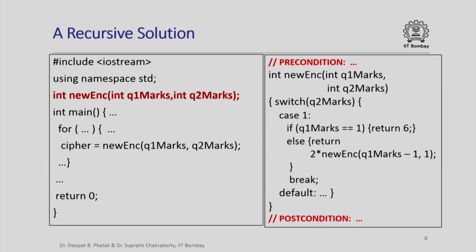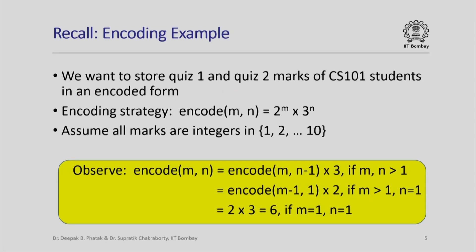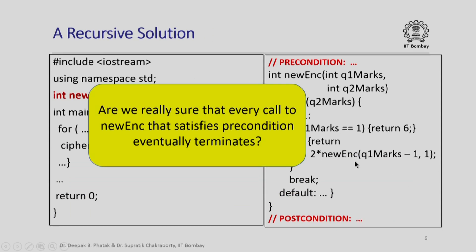We have also seen that this recursive view of the encode function naturally lends itself to a recursive solution in C++. This new encoding function recursively calls itself using that same recursive formulation. Given this recursive solution, one might ask: are we really sure that every invocation of new_enc that satisfies the precondition — that both q1 marks and q2 marks lie between 1 and 10 — is eventually going to terminate? Since new_enc calls itself from within, could it be that one invocation calls another, which calls another, and this process continues forever without the program ever terminating?